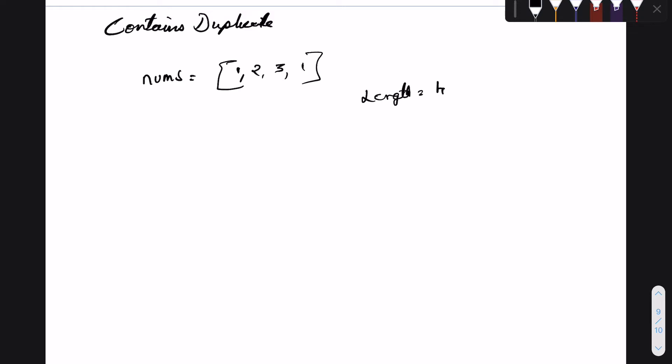As in this case, if you can see in the array, the number 1 is repeated twice. Let's also consider another example which is given as part of the description.